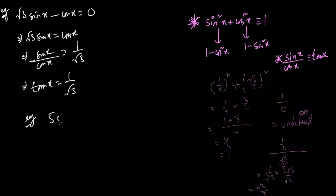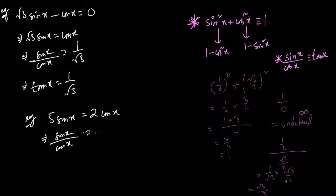Another example: 5 sin(x) = 2 cos(x). Dividing both sides: sin(x)/cos(x) = 2/5, therefore tan(x) = 2/5, and this can be solved. Whenever you have both sin(x) and cos(x) in an equation, use the trigonometric identity sin(x)/cos(x) ≡ tan(x) to convert and solve the sum.